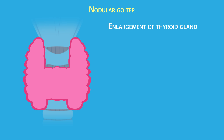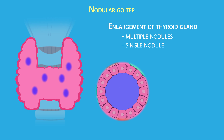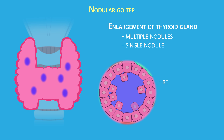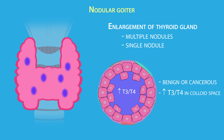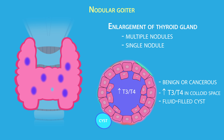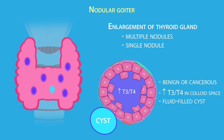Another form of hyperthyroidism is nodular goiter, characterized as any enlargement of the thyroid gland due to multiple nodules or a single nodule. These nodules can result from a benign or cancerous overgrowth of follicular cells, accumulation of thyroid hormone in the colloid space, or simply a fluid-filled cyst within the thyroid gland.